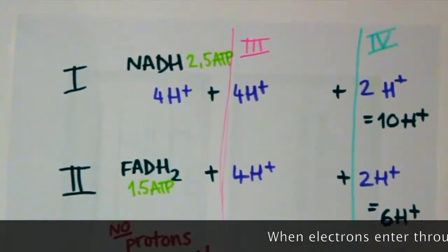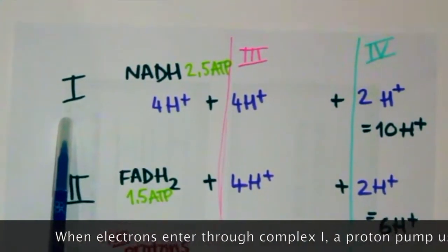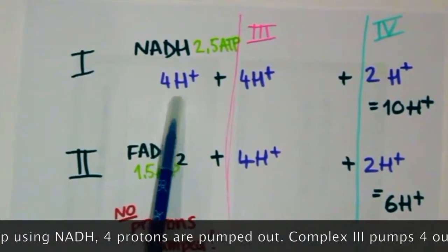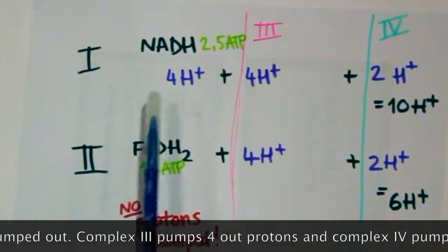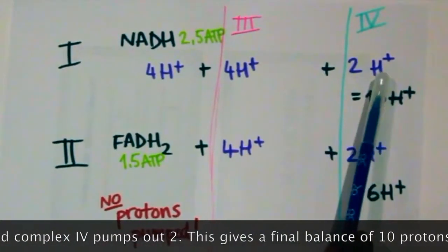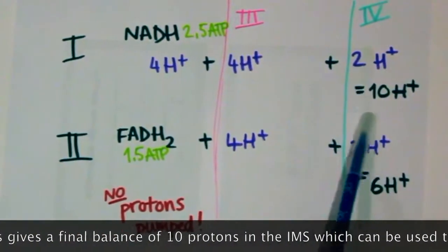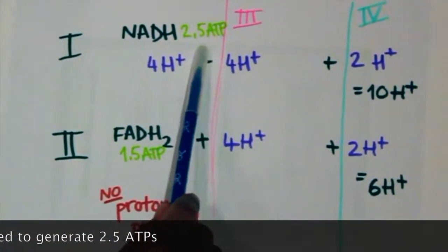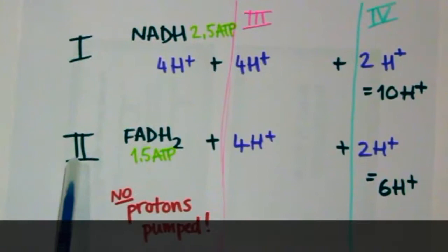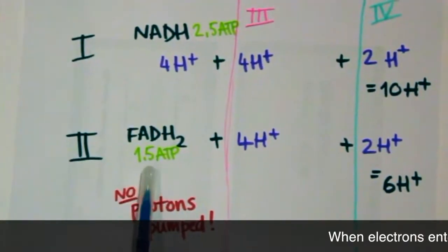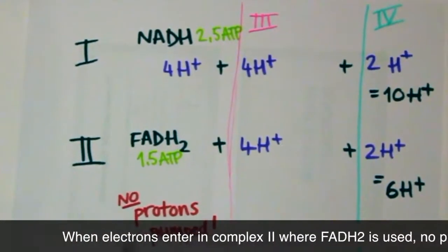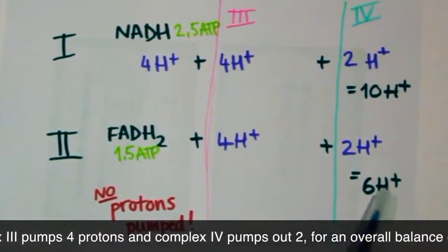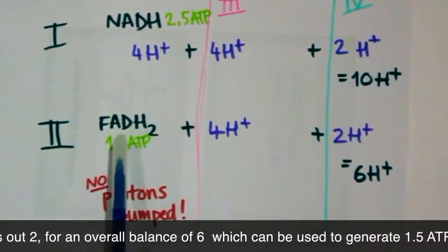When electrons enter the electron transfer chain through complex 1, a proton pump using NADH, 4 protons are pumped out. Complex 3 pumps out 4 protons and complex 4 pumps out 2. This gives a final balance of 10 protons, which in the inner membrane space can be used to make 2.5 ATPs. When electrons enter through complex 2, where FADH2 is used, no protons will be pumped out. Complex 3 pumps 4 protons out and complex 4 pumps 2 out for an overall balance of 6 which can be used to generate 1.5 ATPs.